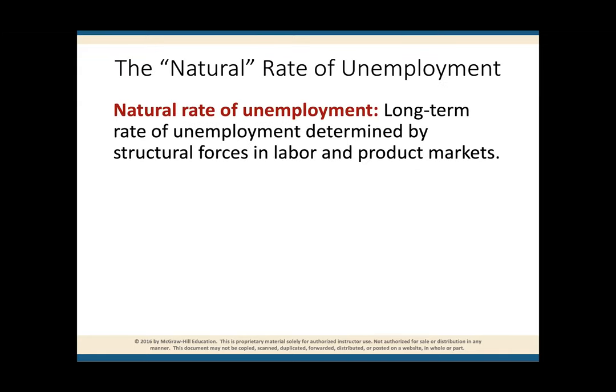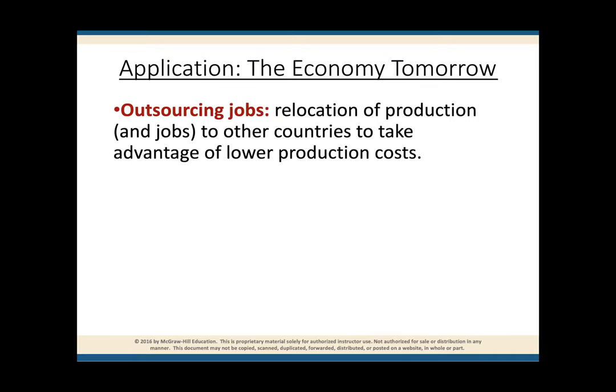The natural rate of unemployment is what is natural — unemployment as a result of frictional, structural, and seasonal factors. Many people complain that one reason we have a lot of unemployment is because American companies are moving jobs abroad through outsourcing. Companies close their plants, move to China, Costa Rica, or South Africa, and create unemployment in the United States.